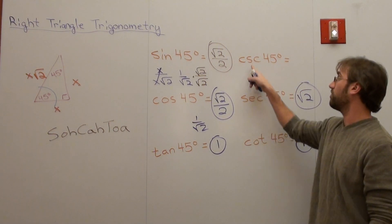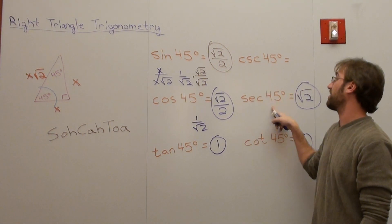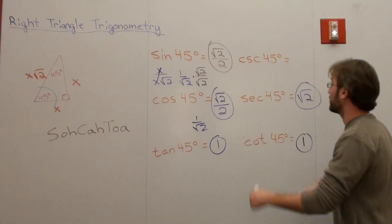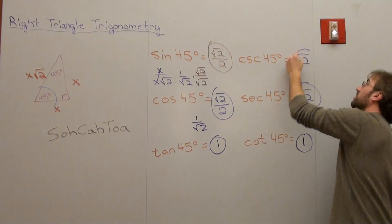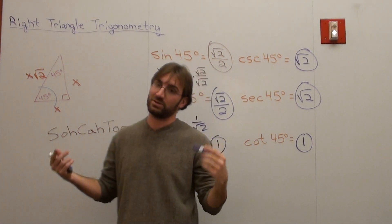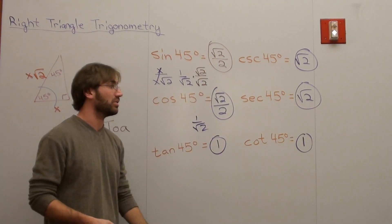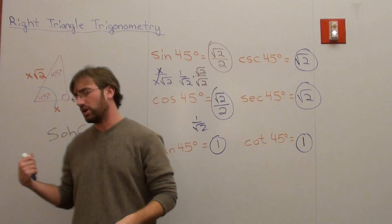Cosecant is the co-function of the secant. 45 is complementary to 45. So I already know that it's root 2 without doing any work whatsoever. That's pretty much it. Very sophisticated way to do it. But you could always just use SOHCAHTOA.